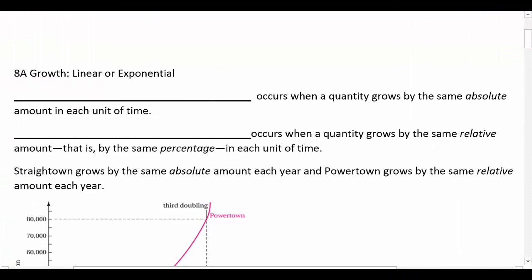Alright, today we're going to talk about exponential versus linear growth. So let's start by defining a couple terms. Linear growth occurs when a quantity grows by the same absolute amount each time.